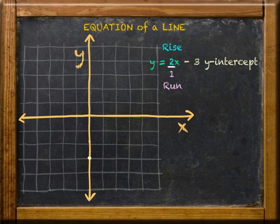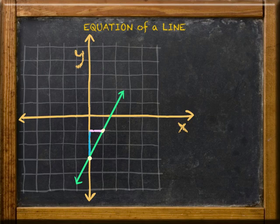From that point, you count off the slope, in this case a rise of 2 and a run of 1. Then connect the two points to show the line. And there it is. You've graphed the equation y equals 2x minus 3.